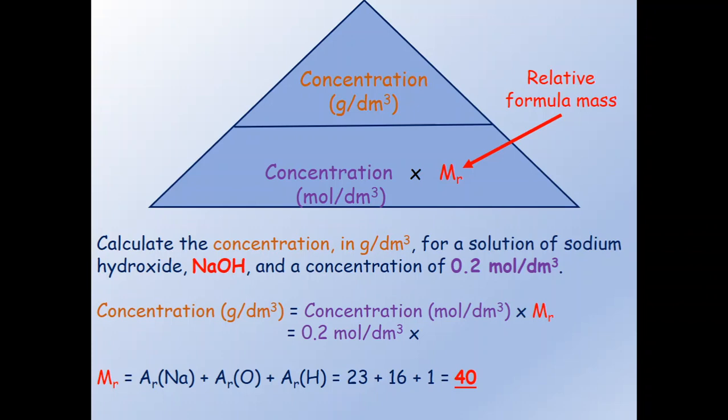Now we just have to plug in those numbers into our equation. We get 0.2 mole per decimeter cube times 40, and this gives us a concentration of 8 gram per decimeter cube.